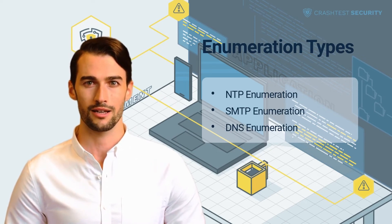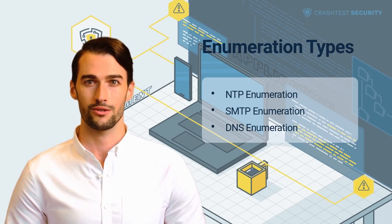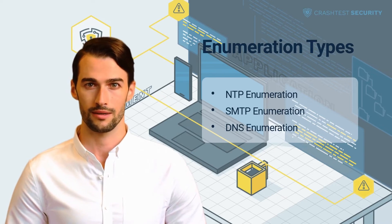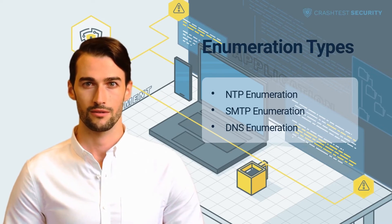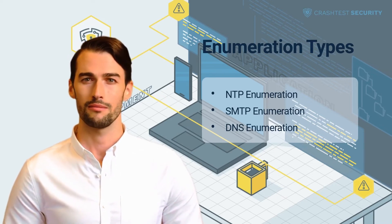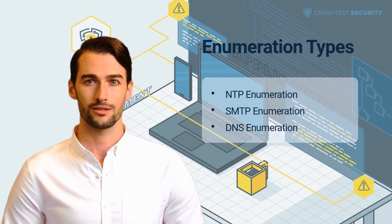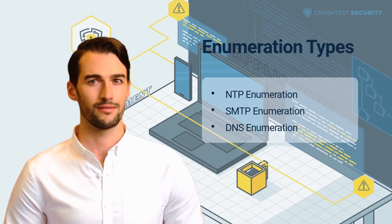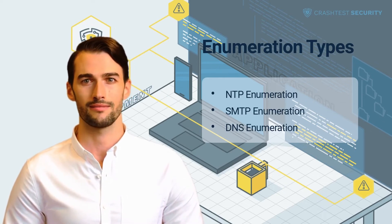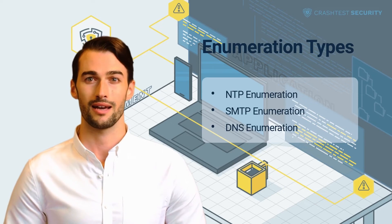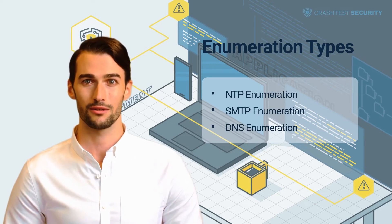Such attacks require attackers to query the NTP agent via UDP port 123, which returns information related to the machines communicating with the NTP server, including system names, client OS, detailed interface info, IP addresses, etc.